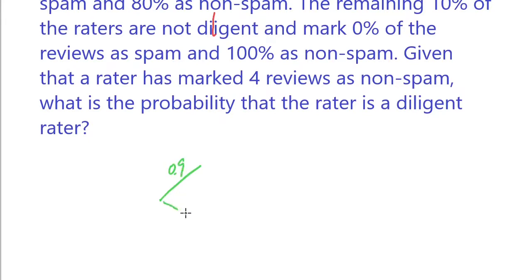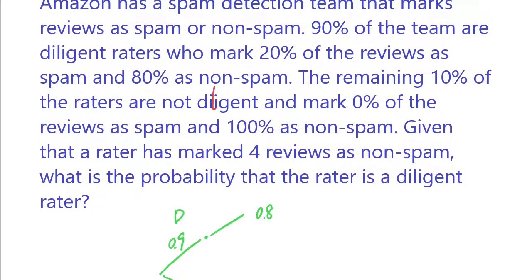And for diligent raters, this person has an 80% chance of marking non-spam. And to mark 4 of them, that will be 0.8 to the 4th. And the other possibility is basically not marking all 4 as non-spam, which is 1 minus that.